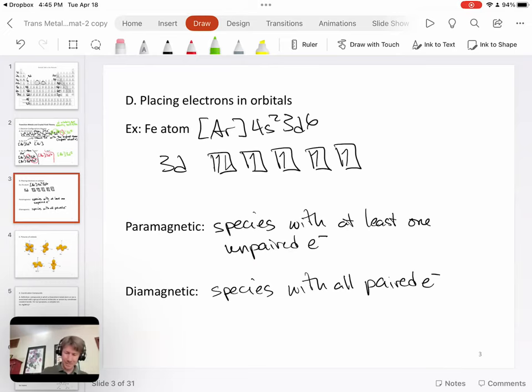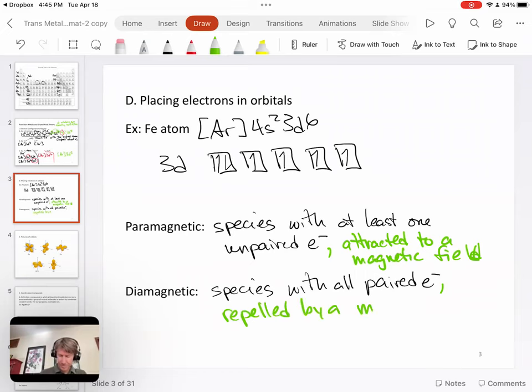Now beyond that, paramagnetic - at least in its interactions with a magnetic field - a species that is paramagnetic is attracted to a magnetic field. And a diamagnetic species is repelled by a magnetic field. That'll be helpful as we test things to see whether they're paramagnetic or diamagnetic.